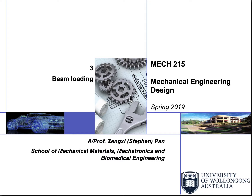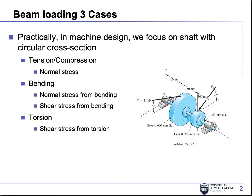This is the third video for the Mech 215 mechanical engineering design. Today I'm going to talk about combined loading. We covered this topic in Mech 251 quite extensively. Here we only look at the shaft condition with a circular cross-section, because that's what we are going to have when we design our shaft or analyze the failure condition for a certain shaft in mechanical engineering design.